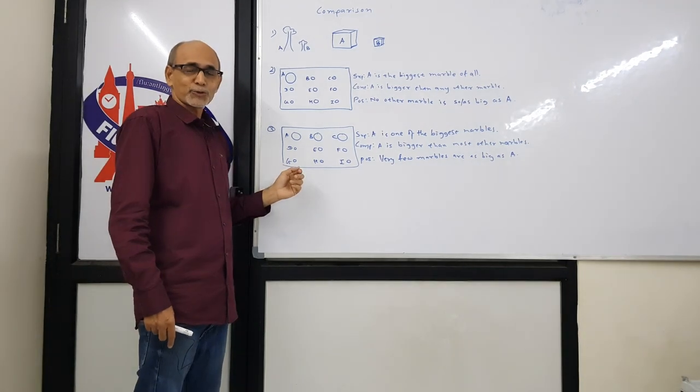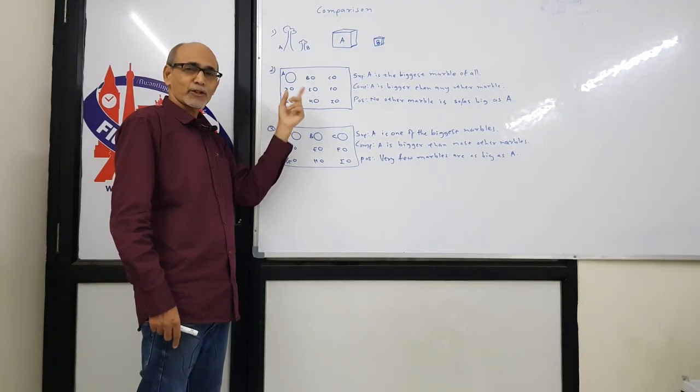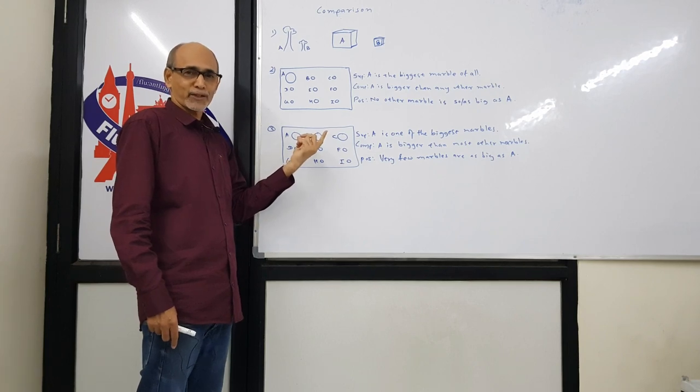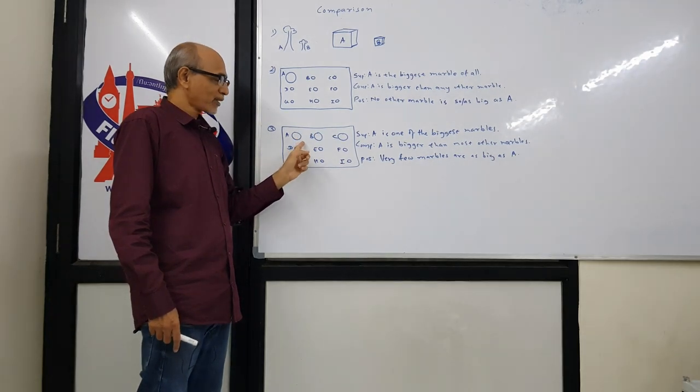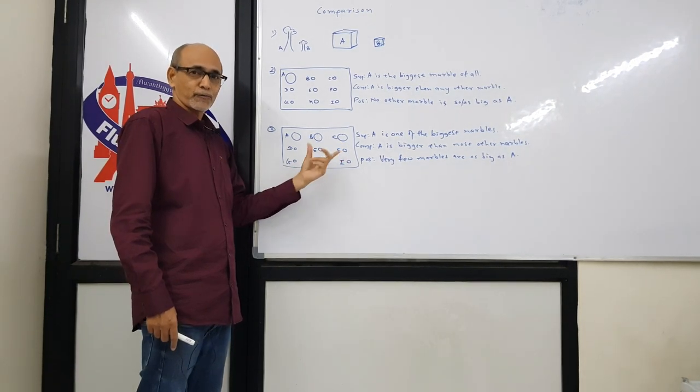Sometimes we have a situation in which not just one item is different from the rest, but a small group is different from the rest. Here you can see there are three marbles, A, B, and C. They are different from the rest.